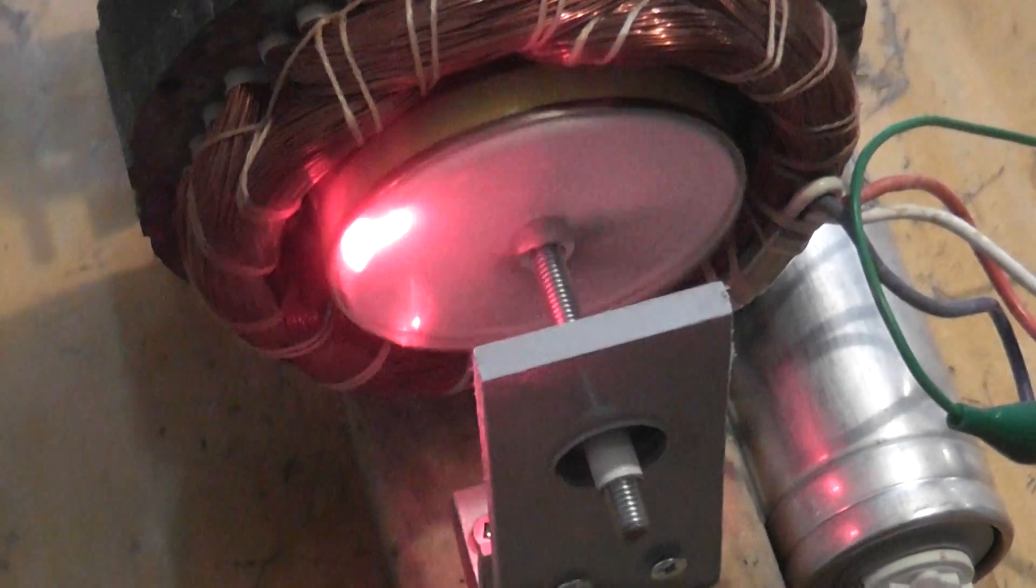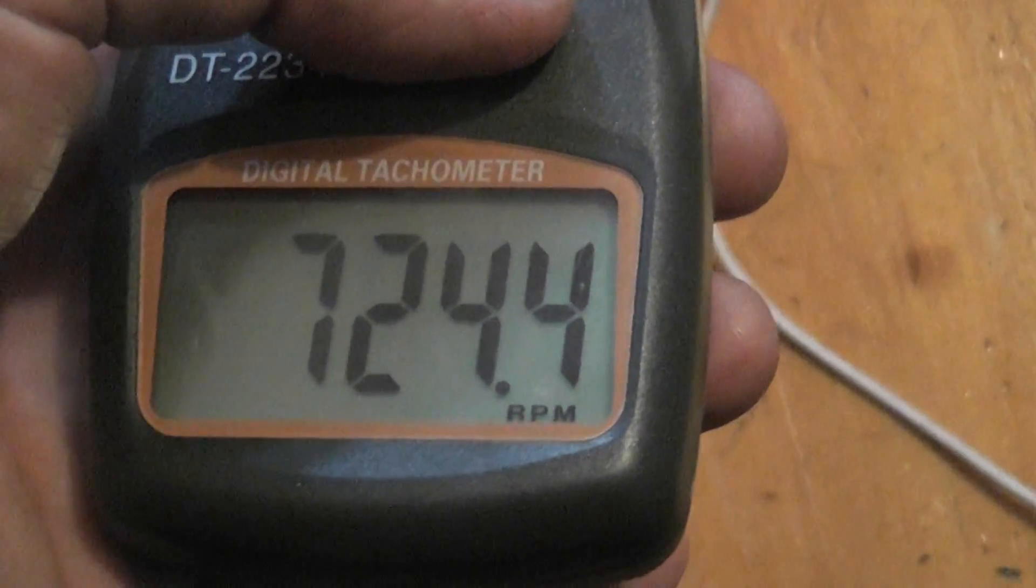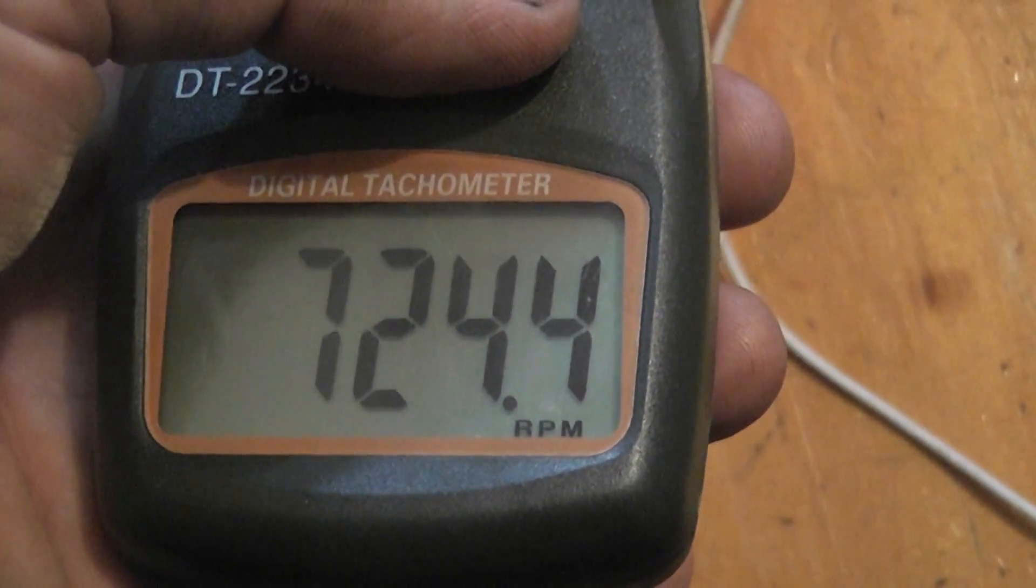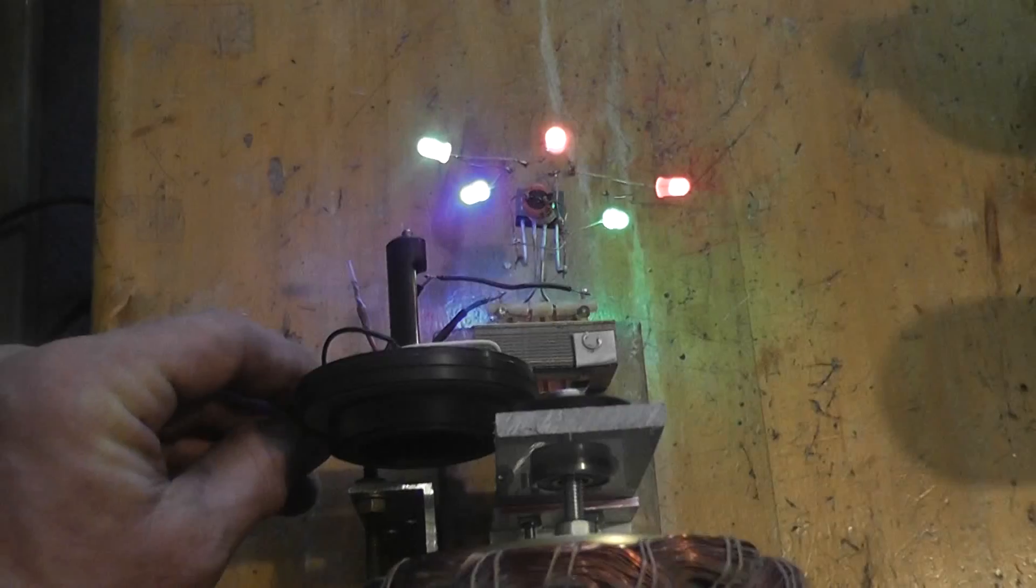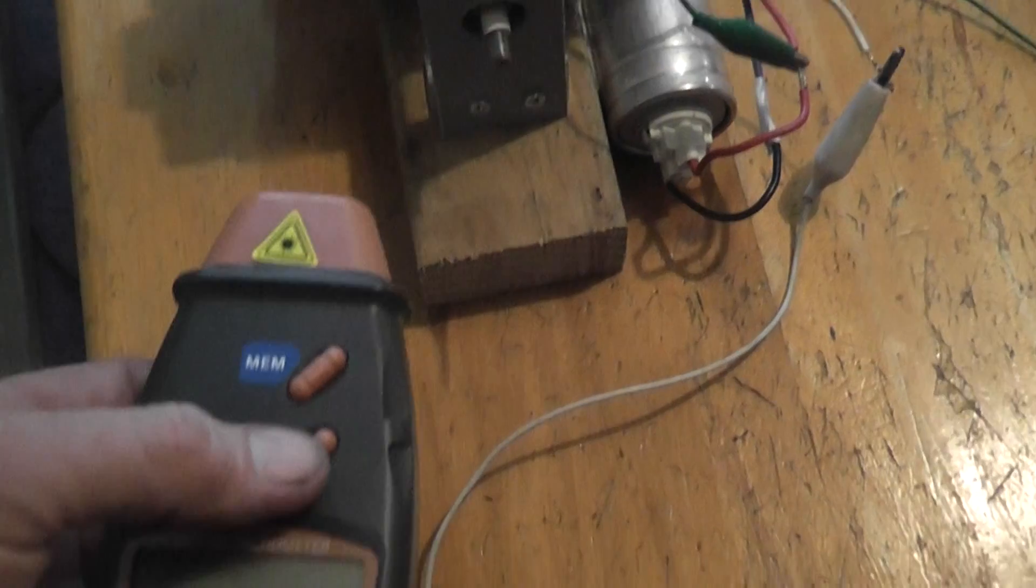Let me do a quick speed check. Speed when loaded at 40 volts is 724 revolutions per minute. I'm going to take the load off and do another test.